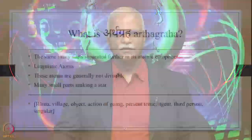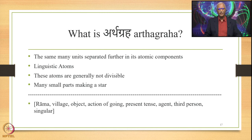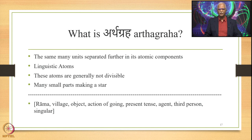Artha Graha involves the same many meaning units separated further into atomic components, called linguistic atoms. These atoms are generally not divisible further. The simile is many small parts making one star. So here we have: Rama, village, object, action of going, present tense, agent, third person and singular — these are the meanings of the small parts, the linguistic meaning atoms. This is the Artha Vigraha at its deepest level.